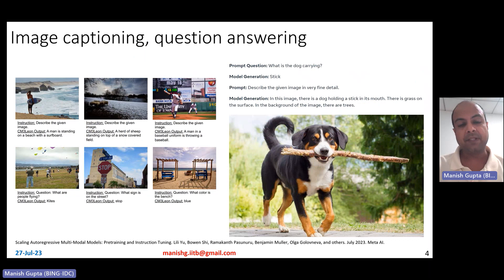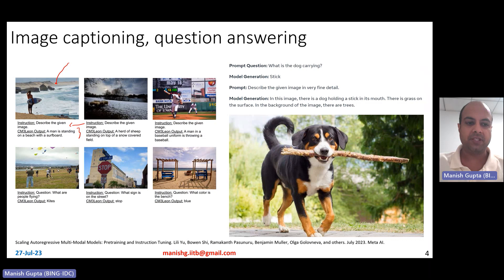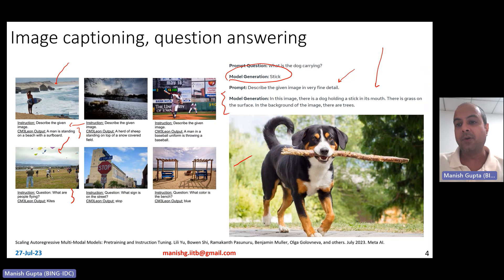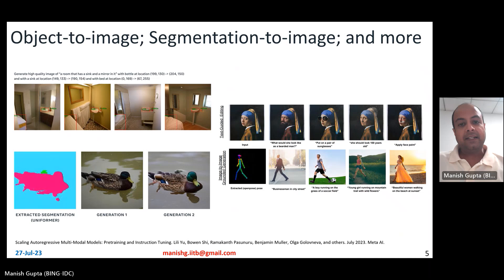Chameleon is a very general purpose multimodal model. You can also use it for multimodal tasks where the output is text, such as image captioning — give an image with the instruction 'describe the given image' and it gives you a nice caption like 'a man is standing on a beach with a surfboard.' You can also use it for visual question answering. Given an image, the question 'what are the people flying?' outputs 'kites.' Or 'what is the dog carrying?' outputs 'a stick.' You can also ask for detailed descriptions and it provides fine-grained image descriptions.